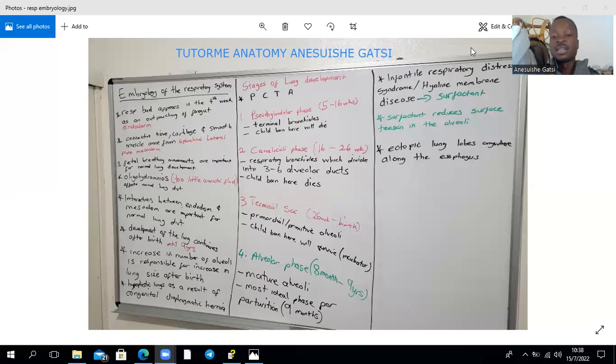The last stage is the alveolar phase, which is the eighth month to nine years after birth. Within this phase, you form mature alveoli, and this is the most ideal phase for you to have parturition.